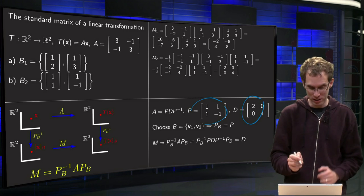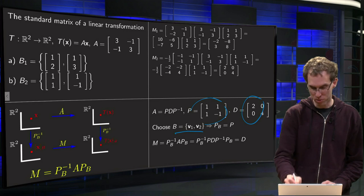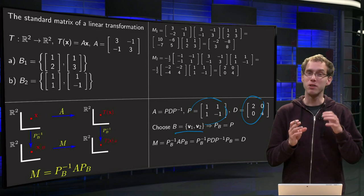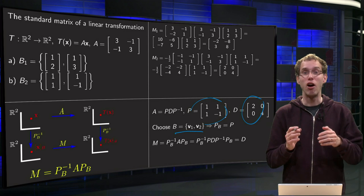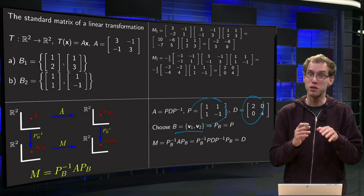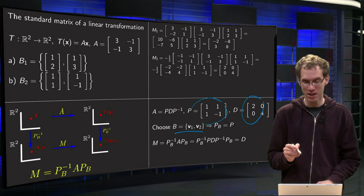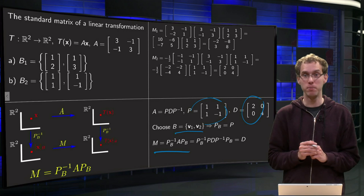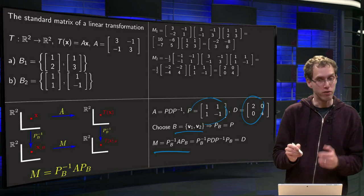We chose as our basis a basis consisting of the two eigenvectors V1 and V2, and because we did that choice, our PB became the same as the matrix P which diagonalizes A. So our matrix M is always PB inverse times A times PB, and now we know A equals PDP inverse.